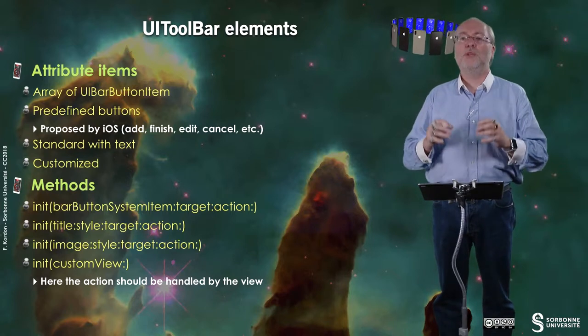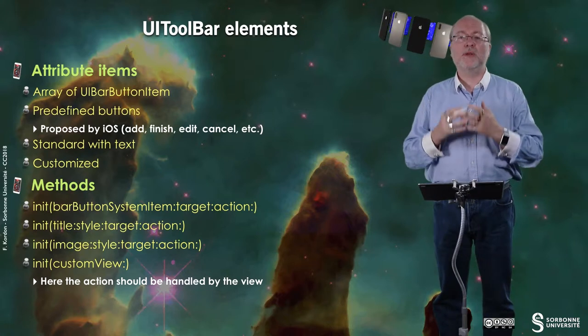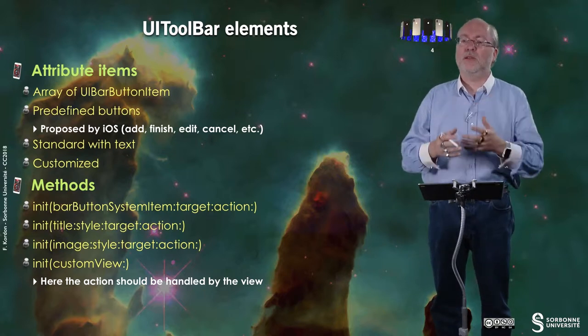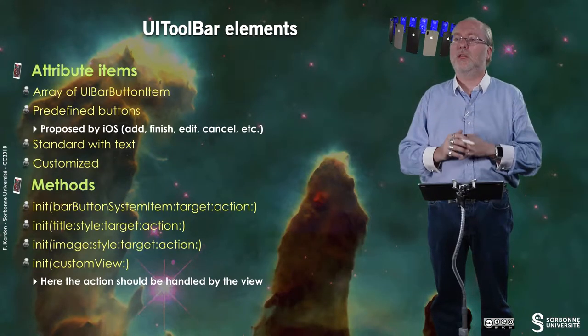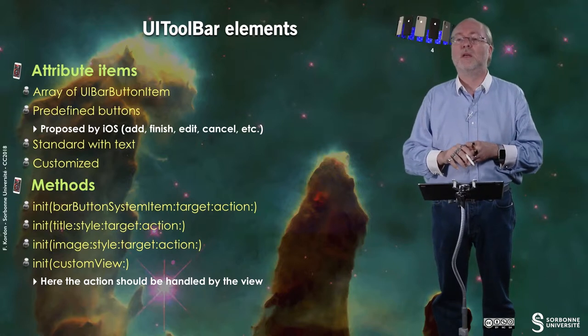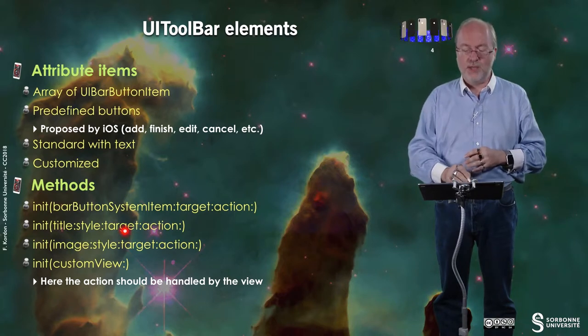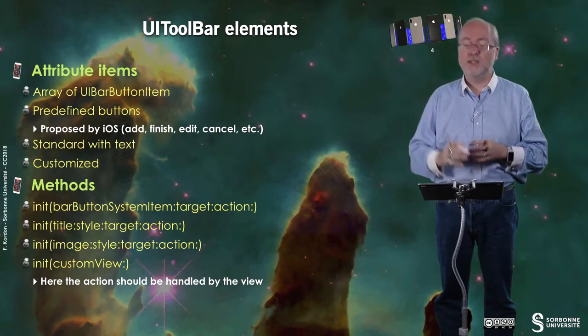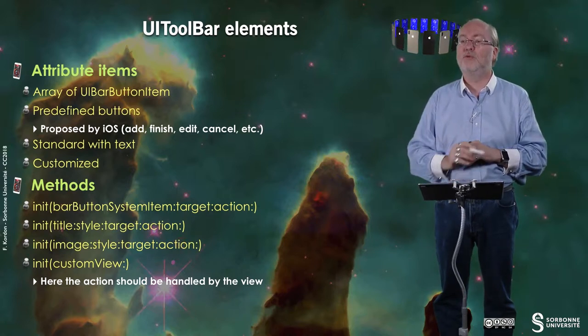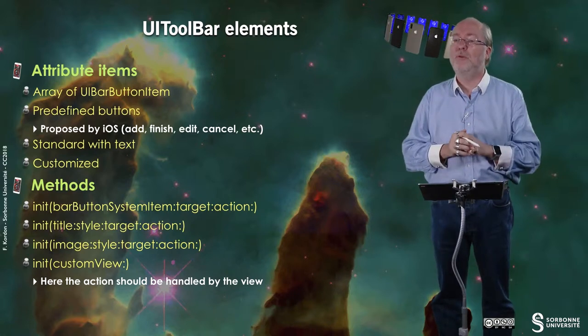A UIToolbar embeds elements that are UIBarButtonItems, and they are stored in an attribute called items, which is an array of UIBarButtonItems. You have predefined buttons proposed in iOS, as well as standard ones with text or customized ones. To create such elements you have several methods: to create a UIBarButtonItem that is a default one with a predefined appearance, one with some text, one with some image, and you can even attach a custom view. In that particular case, you don't have any action to associate to the bar button, because the action should be handled by the view you attach to the button.